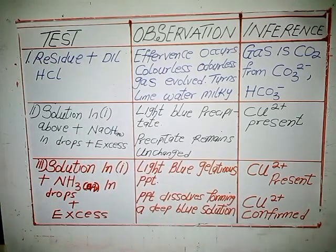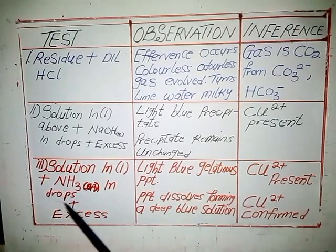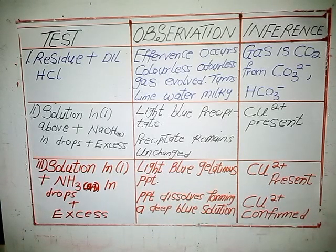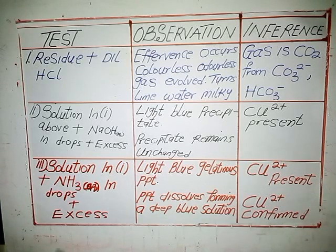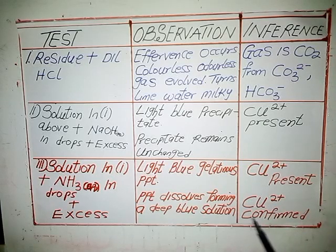Using the same solution, add aqueous ammonia in drops, then in excess. When that happens, a light blue gelatinous precipitate will be formed — the inference is still copper-2 ions. Then, in excess, the precipitate dissolves, forming a deep blue solution. So the copper-2 ions have been confirmed with this reaction.